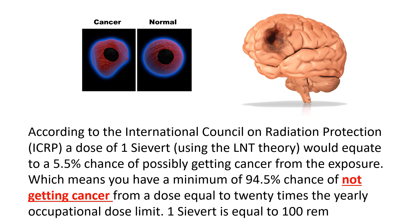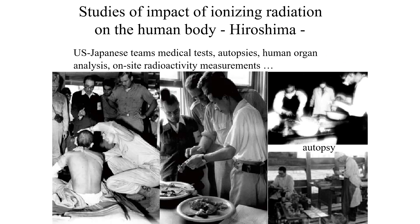Remember, the exposure we're talking about is one sievert, which is 20 times the yearly occupational dose that you are allowed to receive. A great deal of the studies we have on the impact of ionizing radiation are based upon the lifetime studies of the survivors of the atomic bomb tests in Japan in World War II.